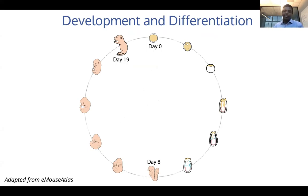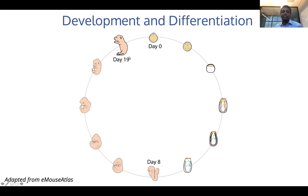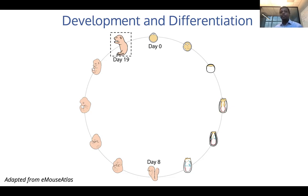I want to begin by drawing your attention to one of the most fundamental biological processes, which is embryonic development. It's quite remarkable and in many ways very enigmatic that a single cell can go through a series of differentiation steps — divisions and specializations — to give rise to a very complex multicellular organism. This process of differentiation continues even in adult animals because there is constant renewal of many systems.